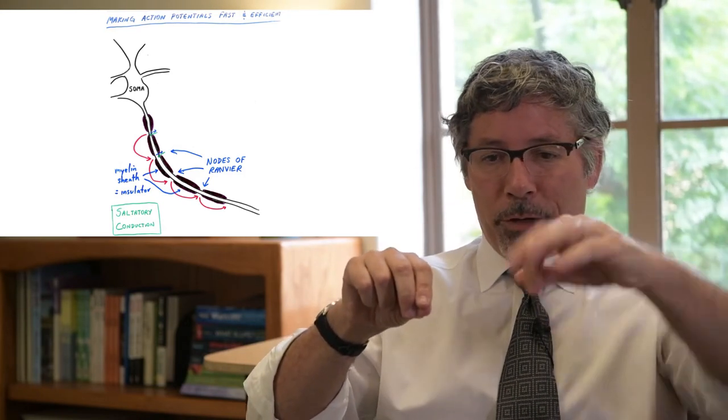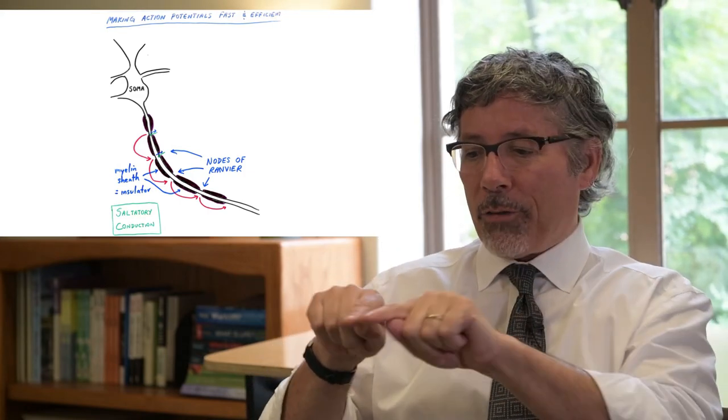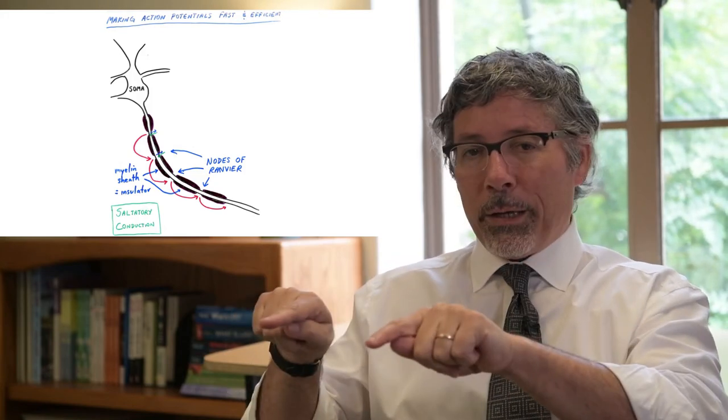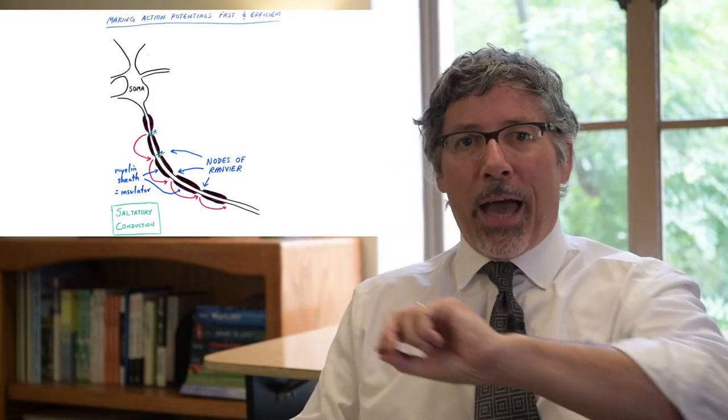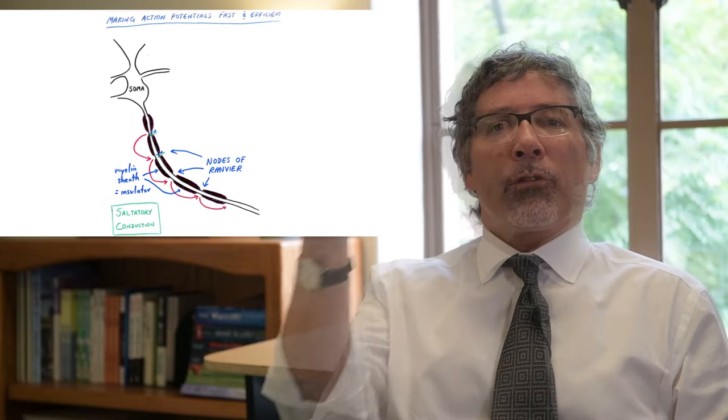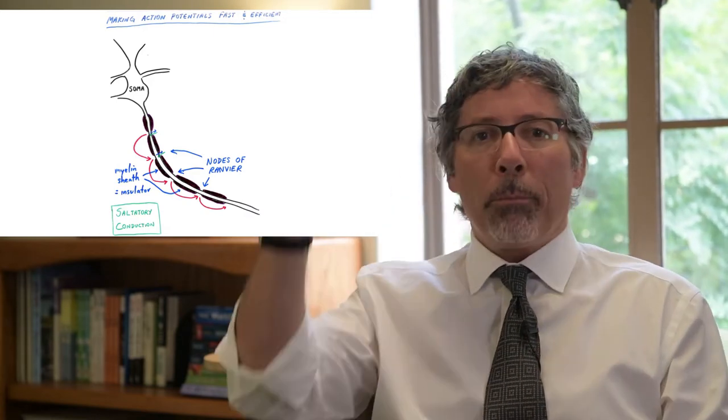We see the signal jump down. The sodium channels open up here, sodium rushes in, and we get the spike. Then inside we have diffusion of the ions. At the next node, sodium channels are opening, sodium rushes in, and so on. It moves down the axon. It's called saltatory conduction from saltare to jump.